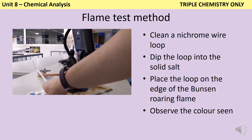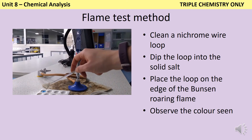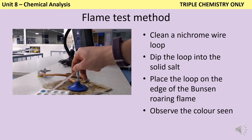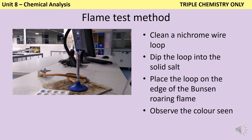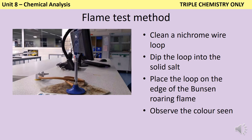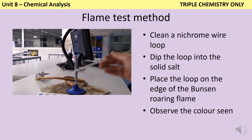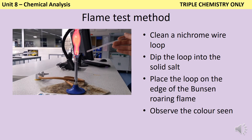Here I've got a small amount of copper compound — you can see it there in my spotting tile. I put the wet wire into that copper sulphate, then put it into the edge of the clear part of a Bunsen burner roaring flame, and you can see that greeny blue flame there. Before I can do another test, I need to return it to the hydrochloric acid to remove all of the leftover copper compound. Now that the wire is clean, I repeat the same test using a lithium compound, and again I see that crimson dark pinky red flame.